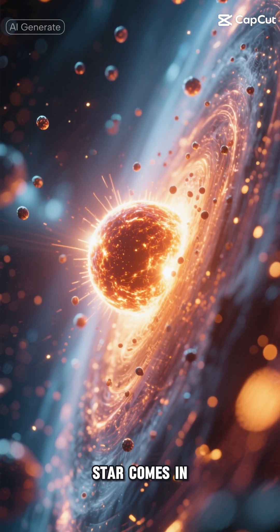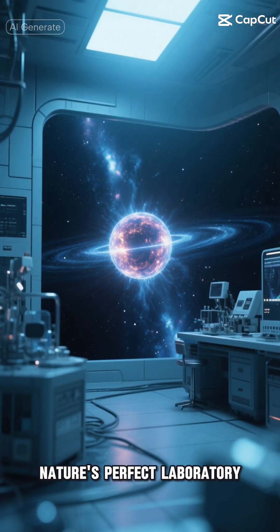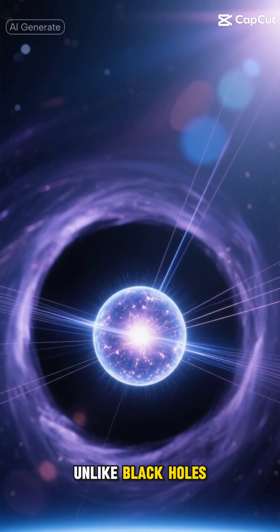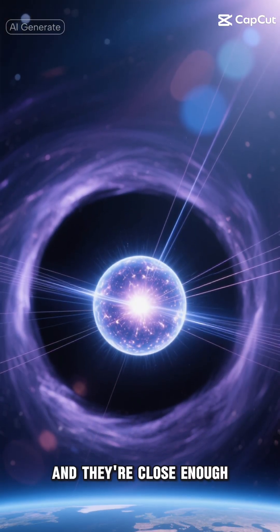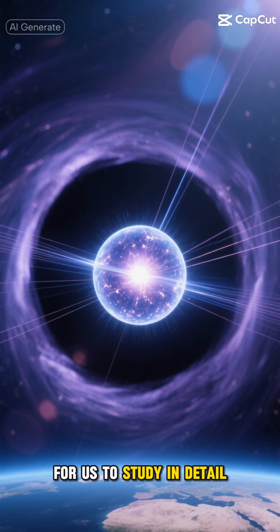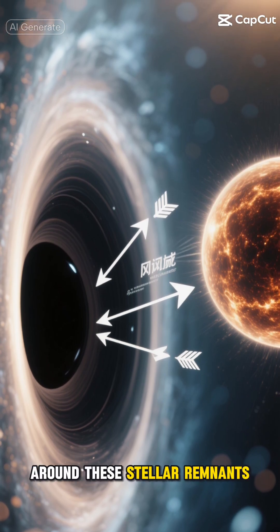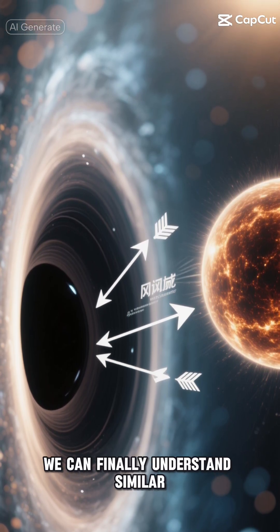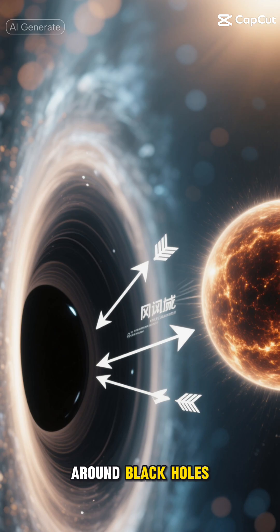That's where our neutron star comes in. Think of it as nature's perfect laboratory. Unlike black holes, neutron stars are visible, and they're close enough for us to study in detail. By observing the behavior of winds around these stellar remnants, we can finally understand similar processes occurring around black holes.